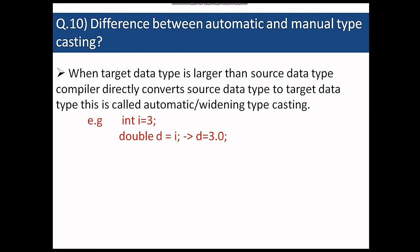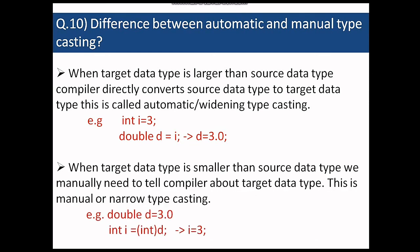But in manual or narrow type casting, target data type is smaller than the source data type. So we need to tell the compiler about the target data type. So the syntax goes as int i and in bracket we need to mention the data type in which we want to convert. So this is about automatic and manual type casting.